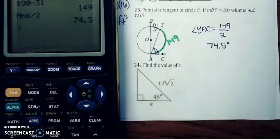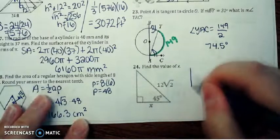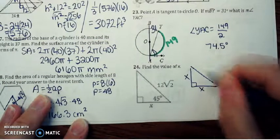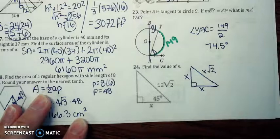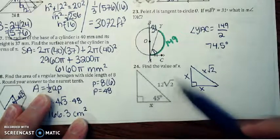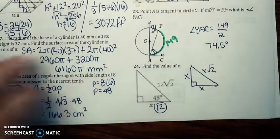For number 24, we have a 45-45-90 triangle. So on the formula sheet, the two legs are the same, and the hypotenuse is the leg times the square root of 2, so this will be really nice for us. This is 12 times the square root of 2, so that means the leg here, which is x, is just going to be 12.